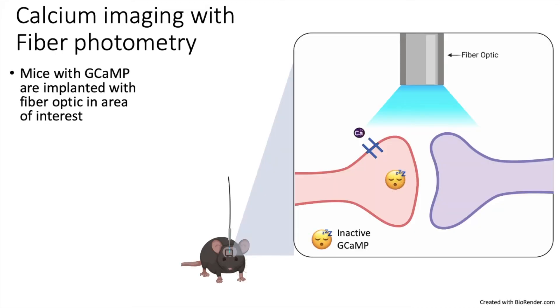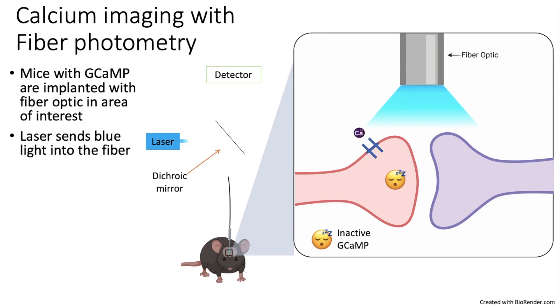To record the activity, scientists use fiber optics which can transmit and receive light signals. First, a fiber optic is implanted in an area of interest in a mouse's brain. On the experiment day, the fiber is attached to a laser and a detector. When the laser is activated, blue photons are reflected off a dichroic mirror and transmitted into the fiber where it travels to the mouse's brain. In the brain, if the cell is not active, there will be no calcium to bind to GCaMP and the photons will be absorbed by the tissue.